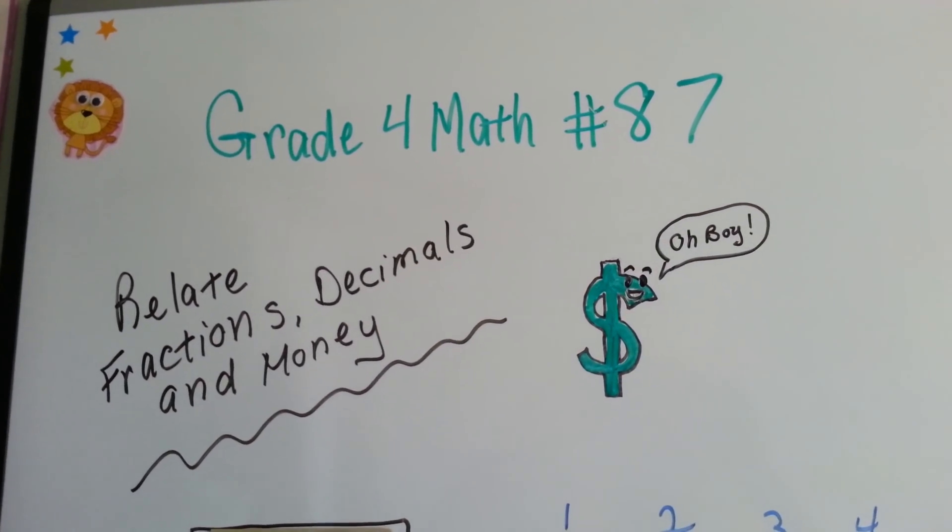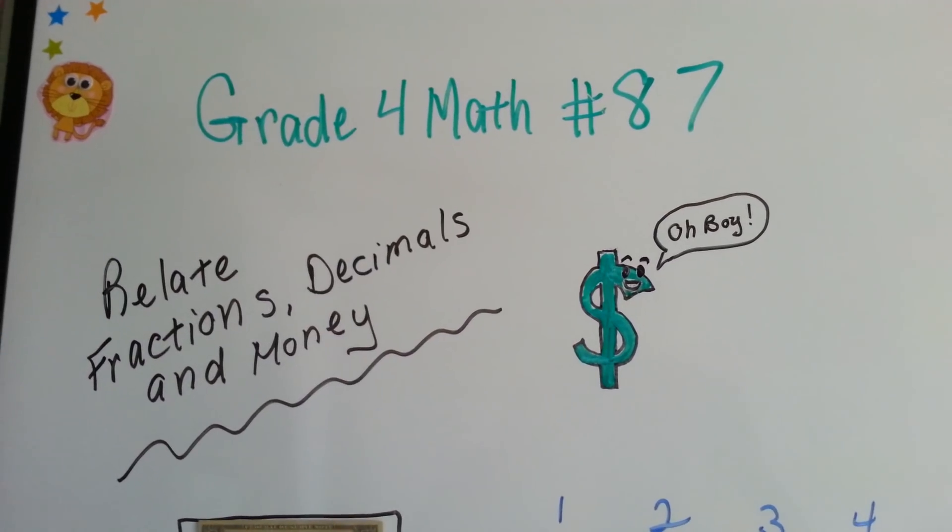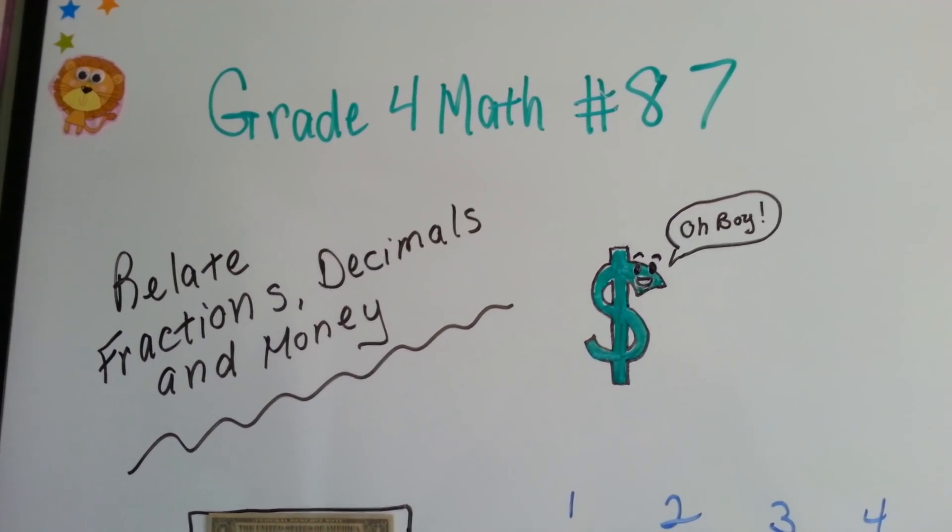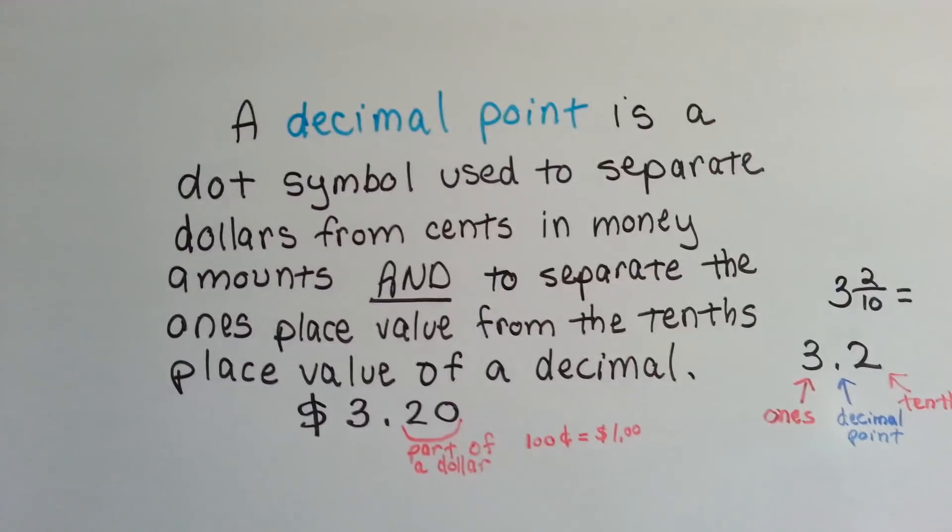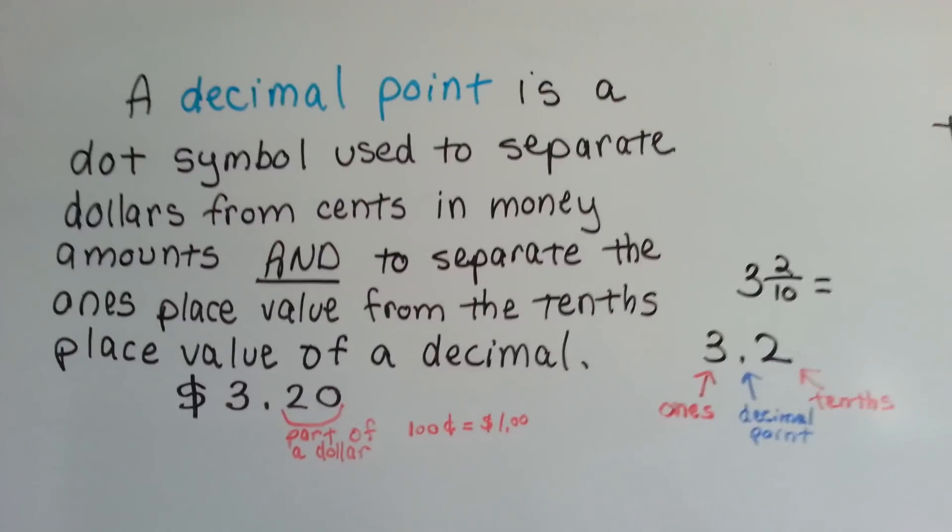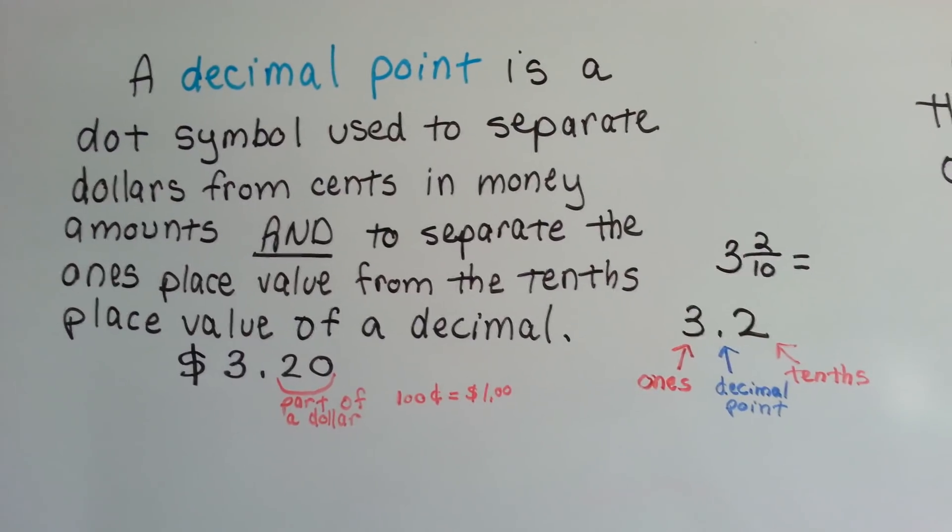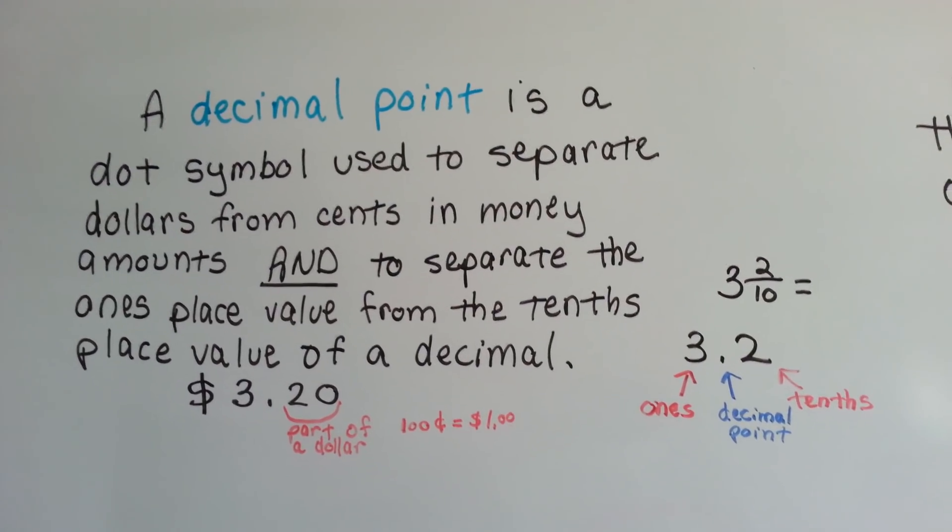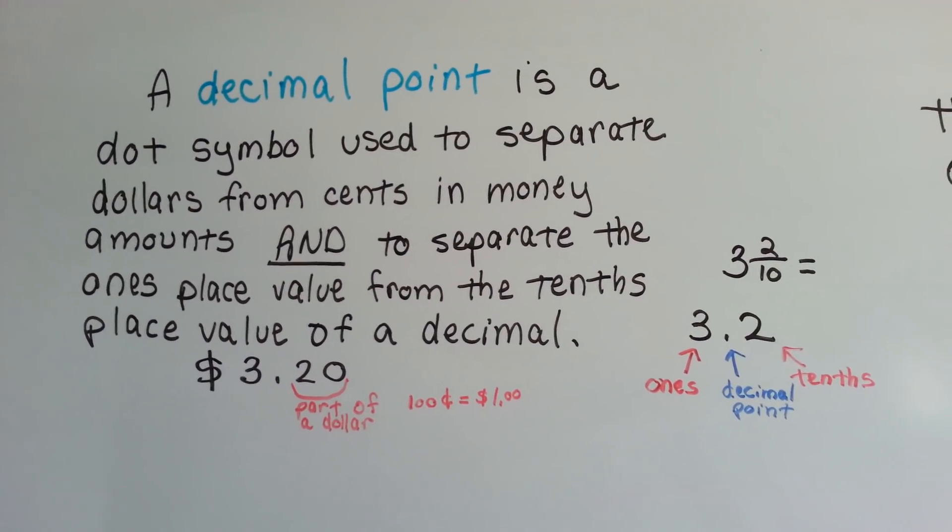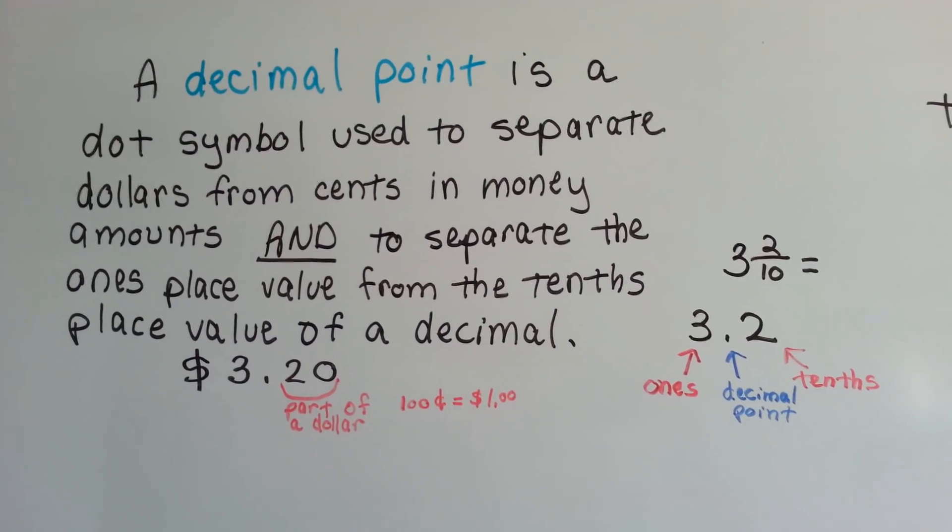Grade 4 math number 87. Relate fractions, decimals, and money. A little review, a decimal point is a dot symbol used to separate dollars from cents in money amounts, and to separate the ones place value from the tenths place value of a decimal.